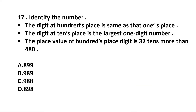Question number 17. Identify the number. Statement 1: the digit at the 100's place is the same as the 1's place. Statement 2: the digit at the 100's place is the largest single-digit number. Statement 3: the place value of the 100's place digit is 32 times more than 480. From Statement 1, options B and D are possible. From Statement 2, the largest single-digit number is 9, and option D has 9 at the 10's place. So our answer is option D.